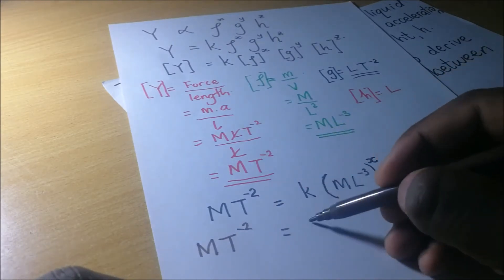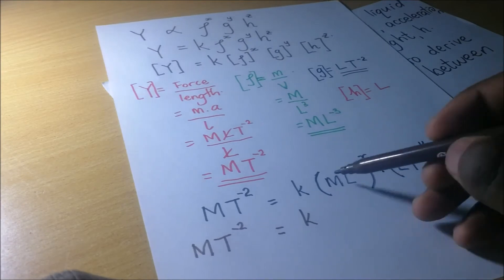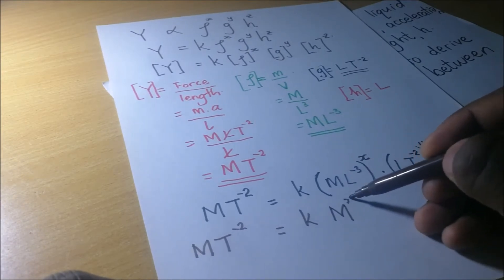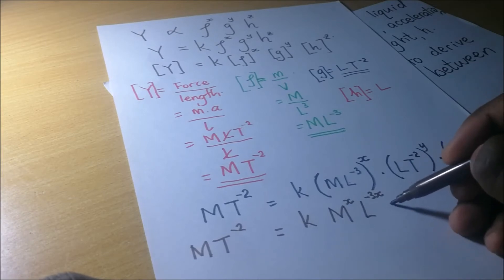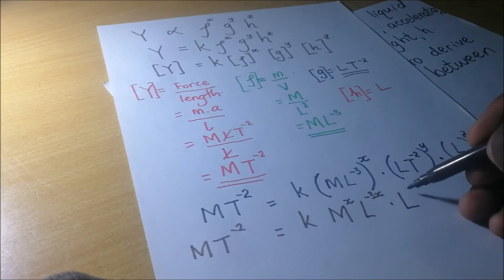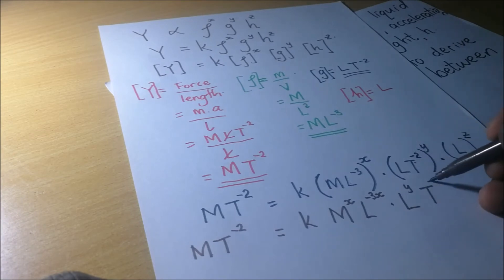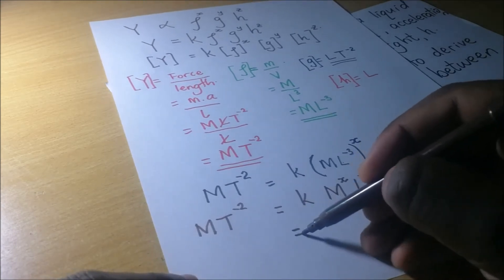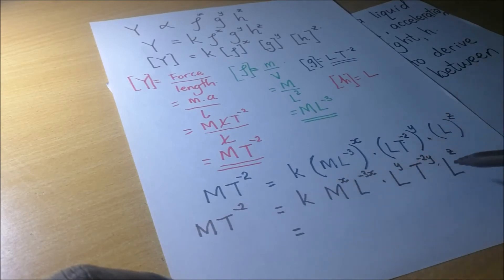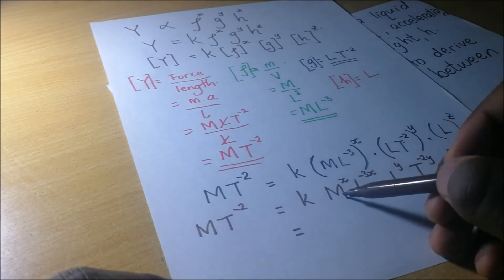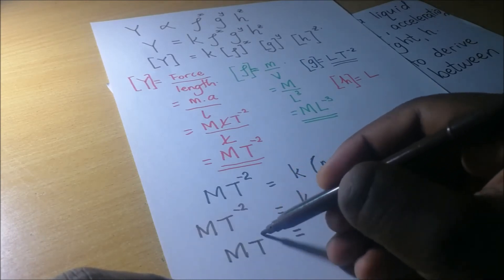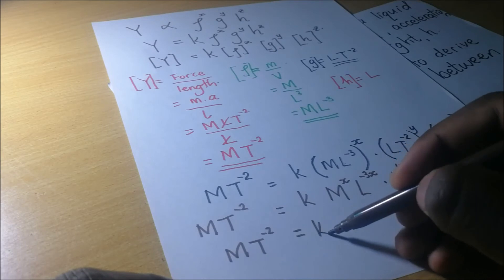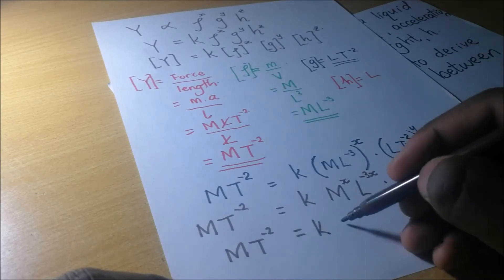Expanding, we get M·T⁻² equal to K times M to the power X, L to the power negative 3X, times L to the power Y, T to the power negative 2Y, times L to the power Z. We now collect like terms using the laws of indices.